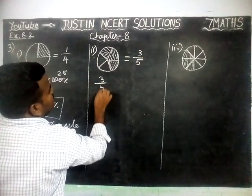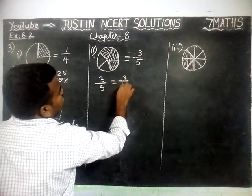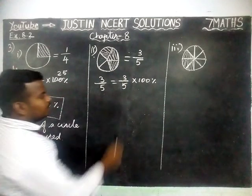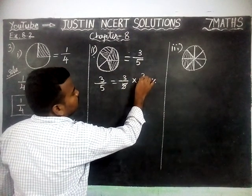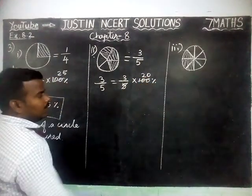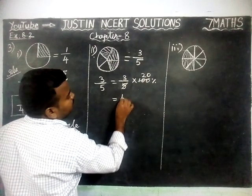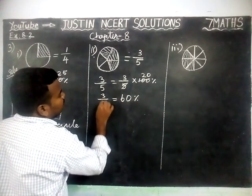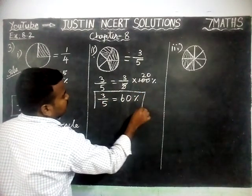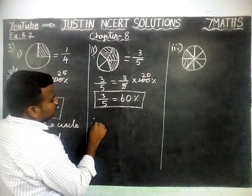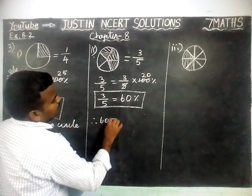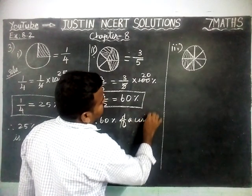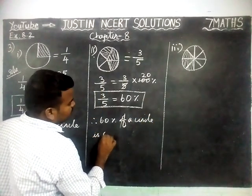Now we are going to find the percentage. 3 by 5 is equal to 3 by 5 into 100%. 3 by 5 gives 60, so 3 by 5 is equal to 60%. Therefore, 60% of the figure is colored.